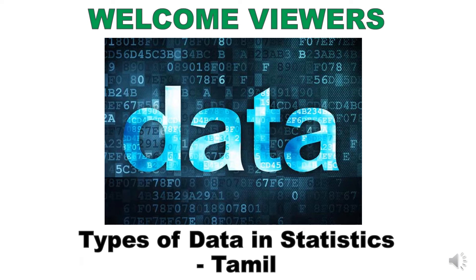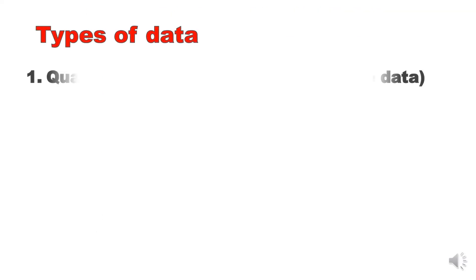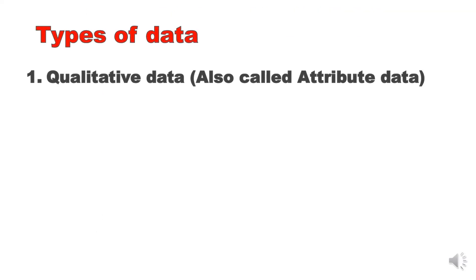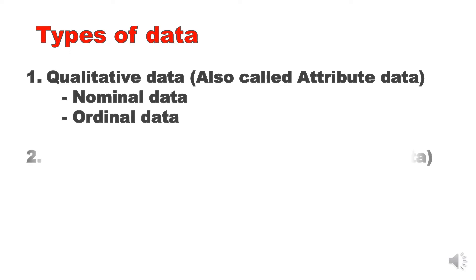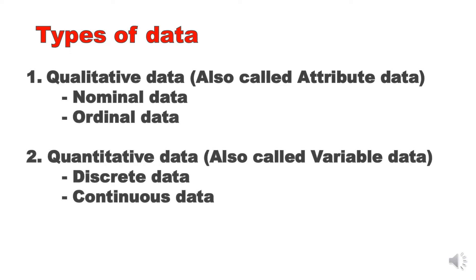Hi friends, welcome to our channel. I am going to talk about types of data in statistics. There are two types of data in statistics: one is qualitative data and one is quantitative data. Qualitative data is attribute data and quantitative data is variable data.